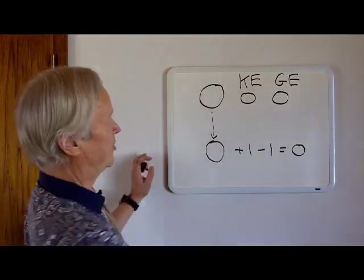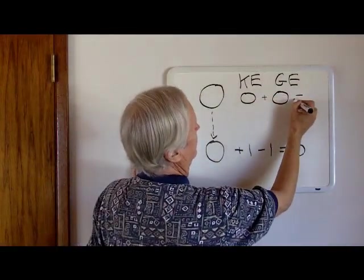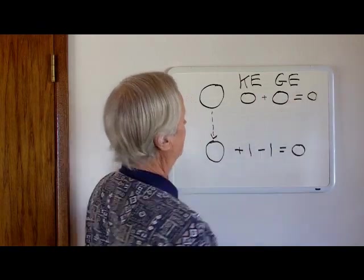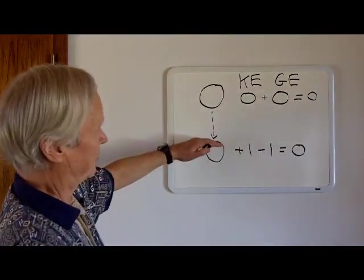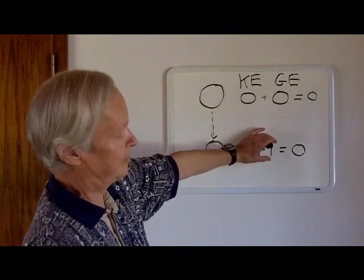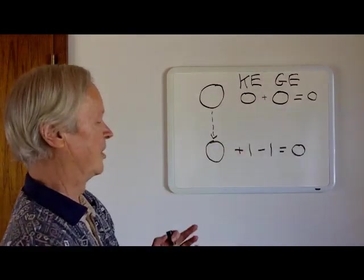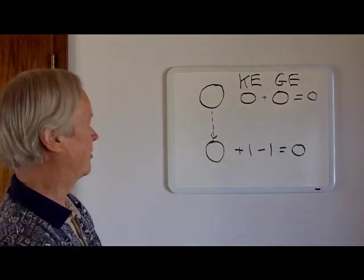Before we release the object, we have these two energies equal to zero. As we release the object, energy is conserved. We get an increase in kinetic energy balanced by a decrease in gravitational energy, and the net energy of the system remains at zero to conserve energy.